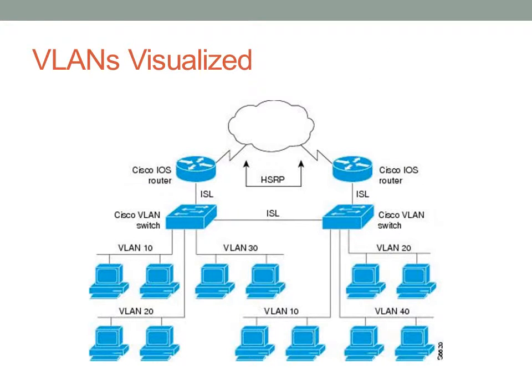I want you to visualize these VLANs with the following diagram — go ahead and pause after I finish talking so you really get an idea of what VLANs mean. You'll see that there are two switches here. This is kind of an old diagram because it uses ISL encapsulation between the two switches. You can ignore the Cisco IOS routers and the HSRP cloud. Basically, we have two switches, and I see VLAN 10, VLAN 20, VLAN 30, and on the switch on the right there's a VLAN 40.